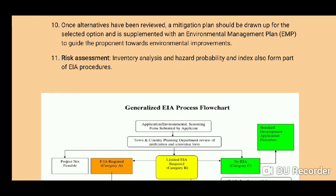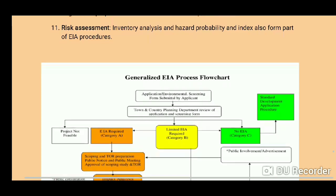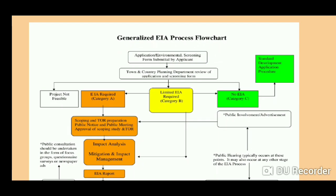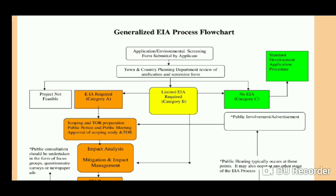Step ten — once alternatives have been reviewed, a mitigation plan should be drawn up for the selected option and supplemented with an Environmental Management Plan to guide the proponent towards environmental improvement. Step eleven is risk assessment — inventory analysis of hazard probability and index effects also form part of the EIA procedure.